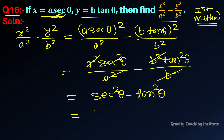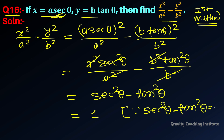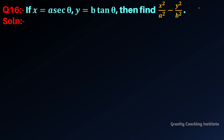This simplifies to sec²(θ) minus tan²(θ), which equals 1, since we know the identity sec²(θ) minus tan²(θ) equals 1. This is the answer. Now we will solve it a second way.